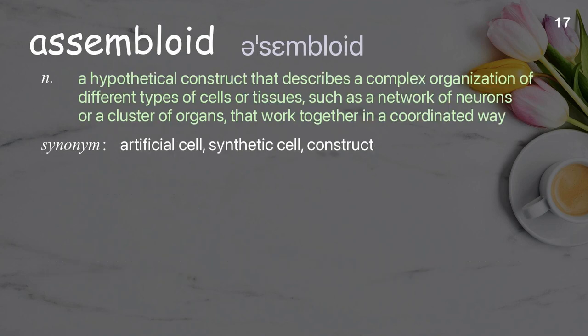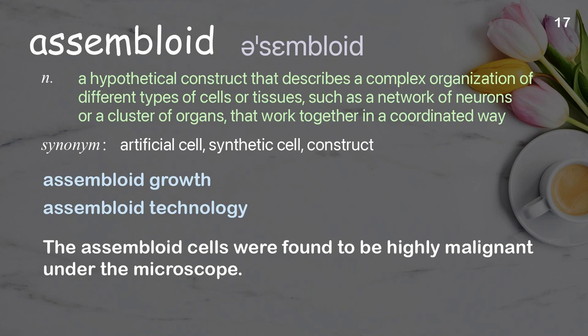Assembloid: a hypothetical construct that describes a complex organization of different types of cells or tissues, such as a network of neurons or a cluster of organs that work together in a coordinated way. Examples: assembloid growth, assembloid technology. The assembloid cells were found to be highly malignant under the microscope.